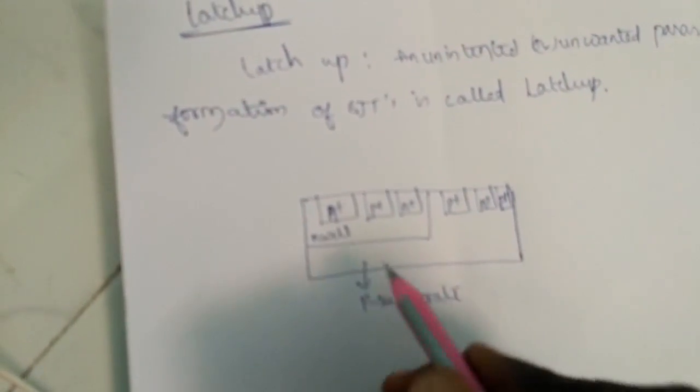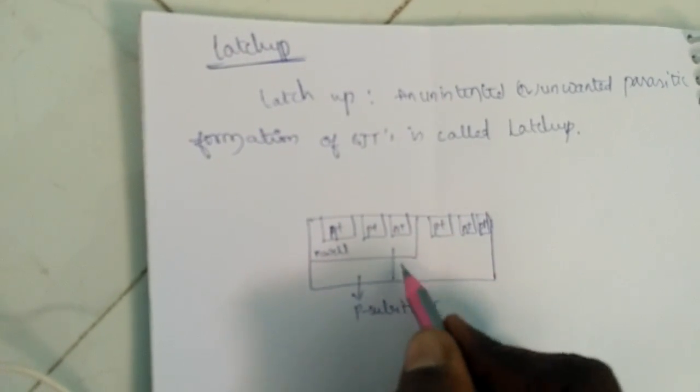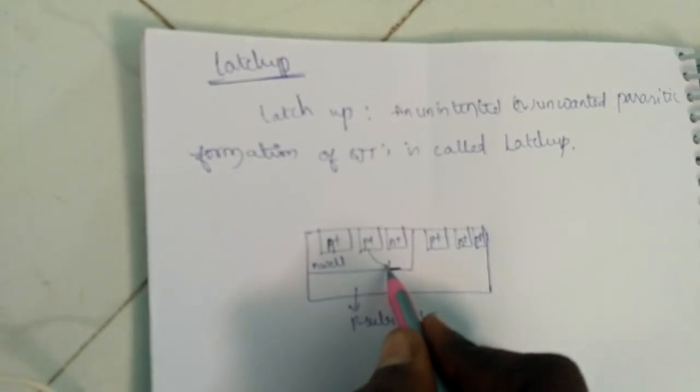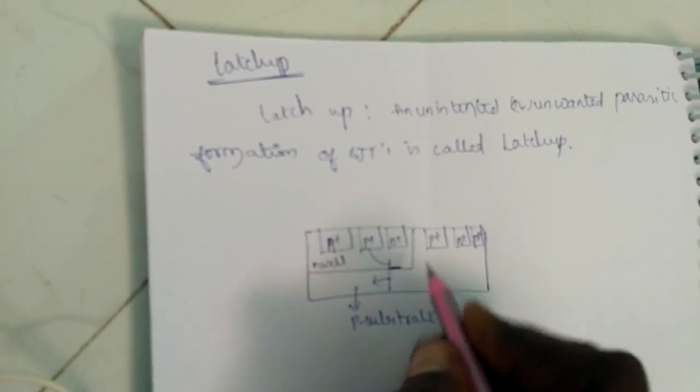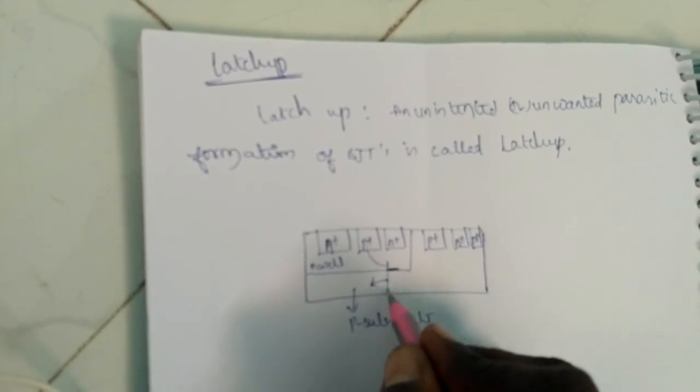In this, one PNP transistor will form like this. It is N-type connected to P substrate, and this P-substrate is connected to P-well.